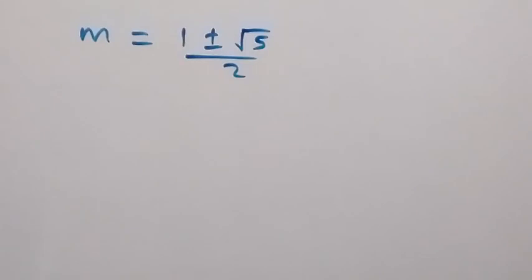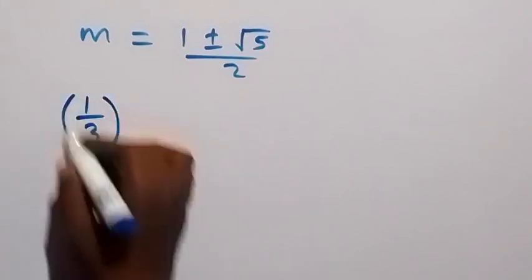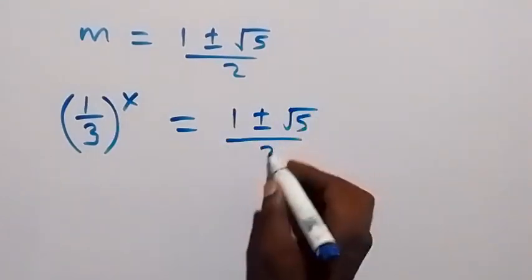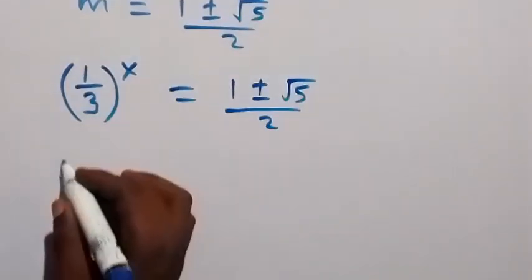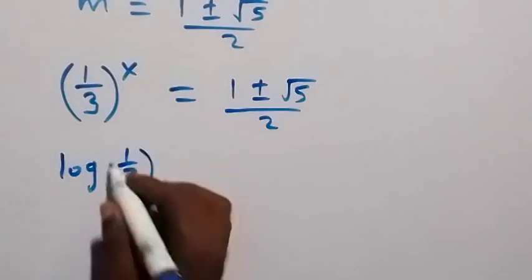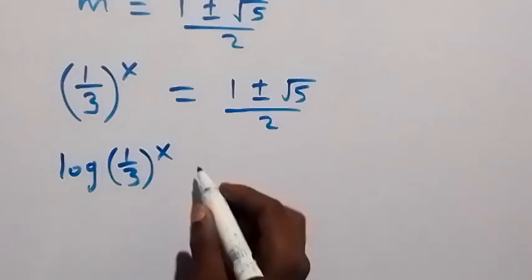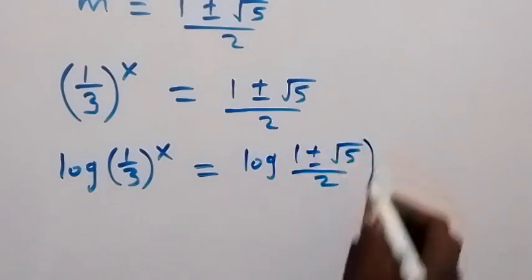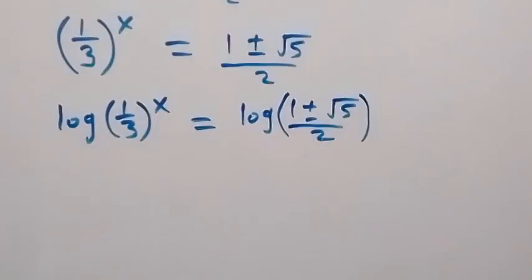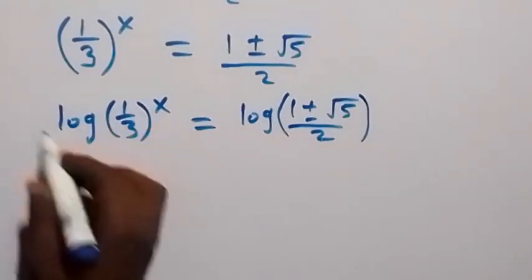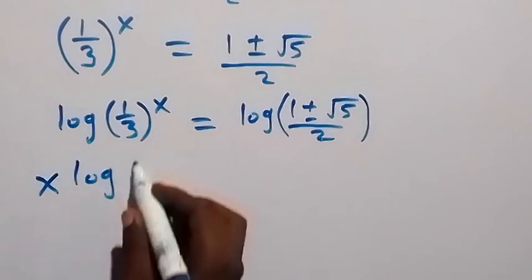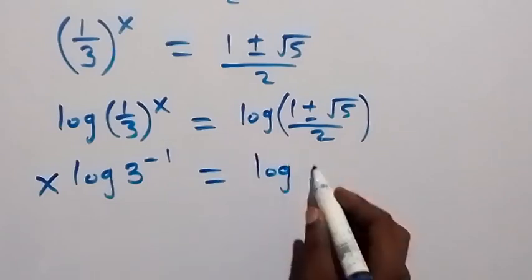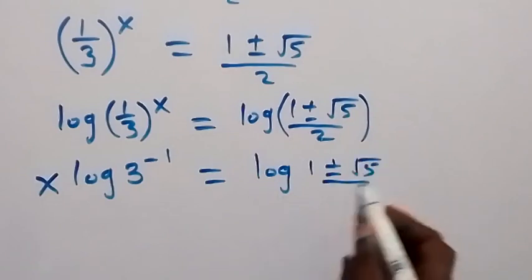We know that m represents (1/3)^x, so (1/3)^x equals (1 ± √5) / 2. Taking the log of both sides: log of (1/3)^x equals log of (1 ± √5) / 2. Using the power law of logarithms, we bring x to the front: x · log(1/3) equals log((1 ± √5) / 2). Writing 1/3 as 3^(−1), log(1/3) becomes −log 3.